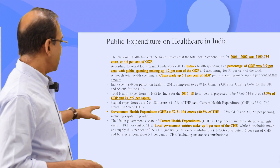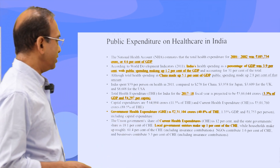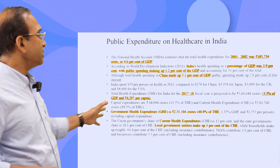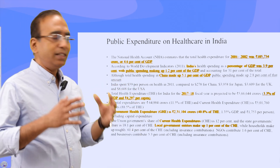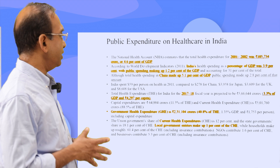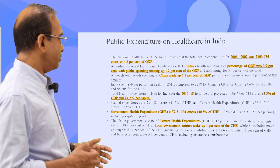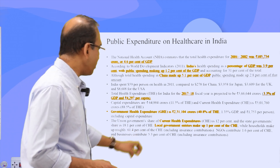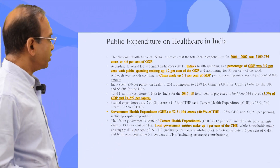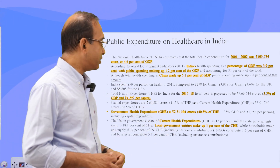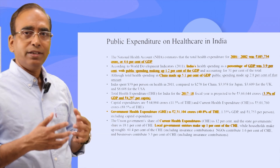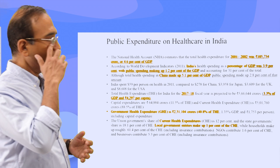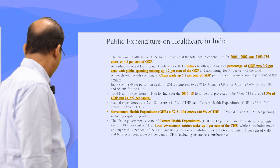There are a few other indicators from the expenditure point of view: total health expenditure, government health expenditure, and current health expenditure. India's current health expenditures are significantly borne by individuals. Almost 61% of the current health expenditure, which includes insurance expenditures, are actually borne by households. Out-of-pocket expenditure is a serious concern for India's health expenditure overall.